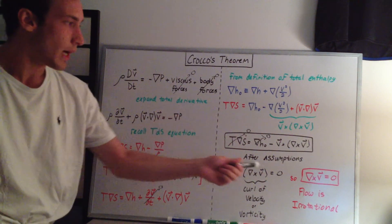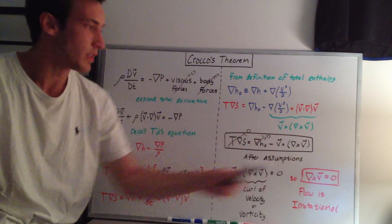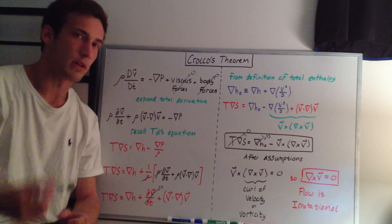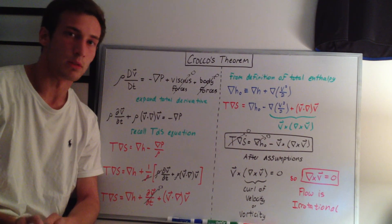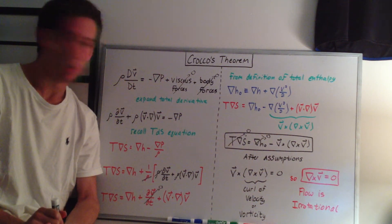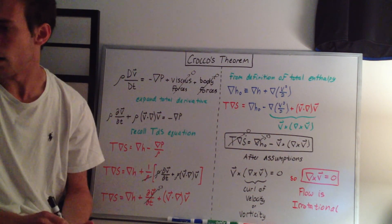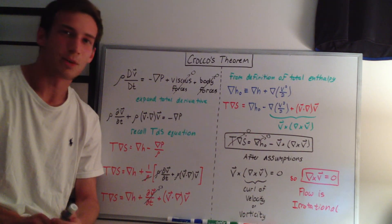So we'll move on using this irrotationality condition, and we'll get some more relations of the velocities for the Taylor-McCall flow problem. I believe that was it for this video. Thanks for watching.